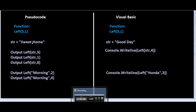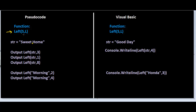The next string manipulation function we are going to look at is called LEFT. In this function we pass two parameters: one is the string variable or string value, and the other is the length of the string we want to extract. For example, when this instruction is executed, the first three characters from the left side are extracted — so the output is SWE.